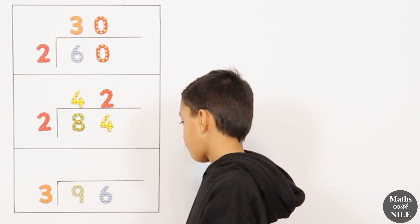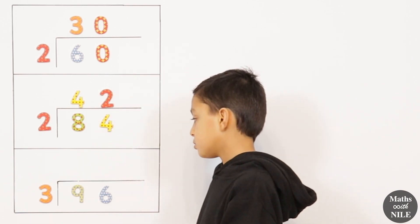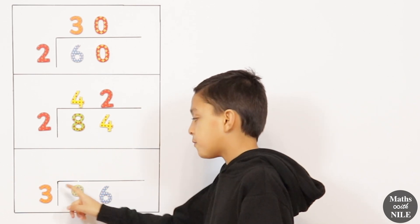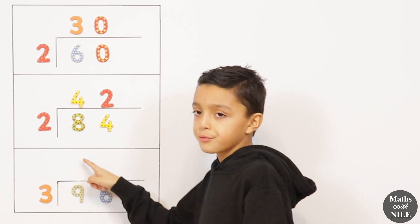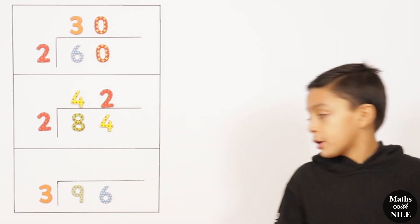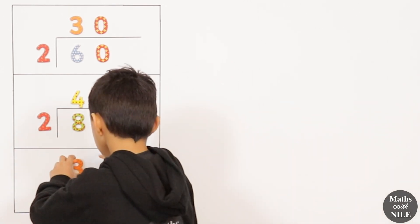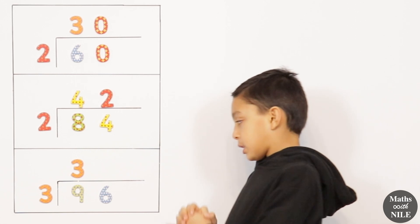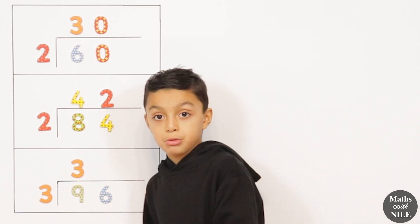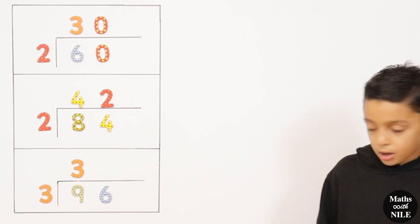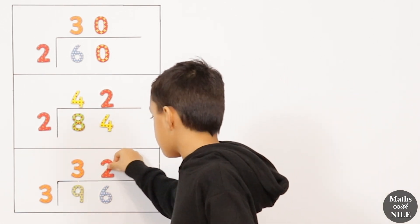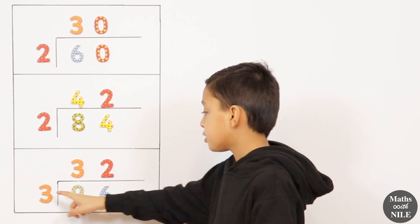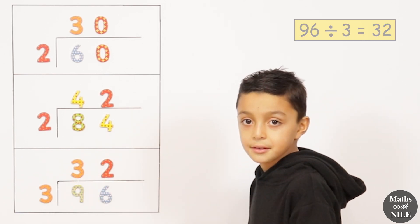The next question is 96 divided by 3. So 9 divided by 3 equals 3, and we put our 3 over the tens, which is the 9. Then 6 divided by 3 equals 2, so we put our 2 on top of the units. The question and answer: 96 divided by 3 equals 32.